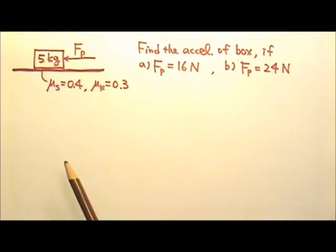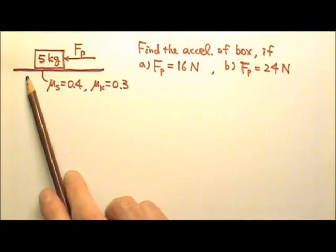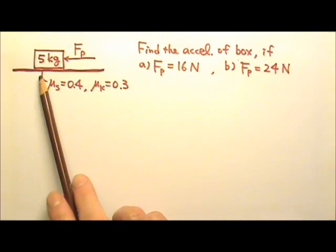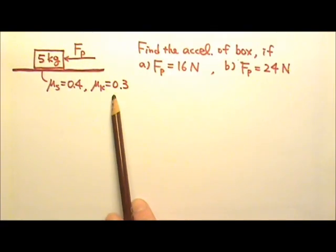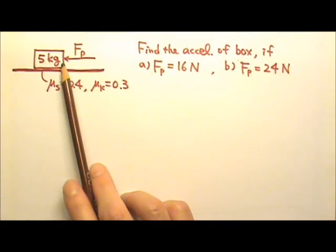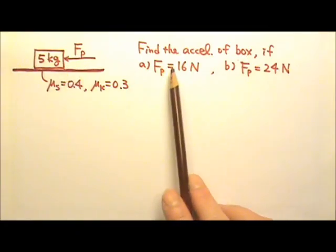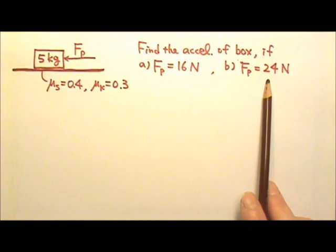Let's do a sample problem now. A 5 kilogram box sits on a table. The contact surface has a μs of 0.4 and a μk of 0.3. Find the acceleration of the box if the pushing force on the box is a) 16 newtons, b) 24 newtons.